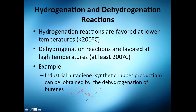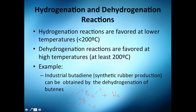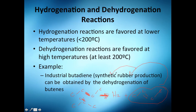Let's say you have a four-carbon chain with a double bond — so you have isobutane. You're going to dehydrogenate it: you remove hydrogen gas and form the double bond, which you'll then use later for synthetic rubber production.